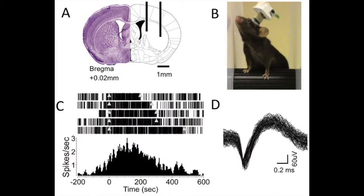Single unit recording is used when the probe is inserted in or near an individual neuron. The probe transmits the electrical activity to an amplifier so that researchers can see the activity.